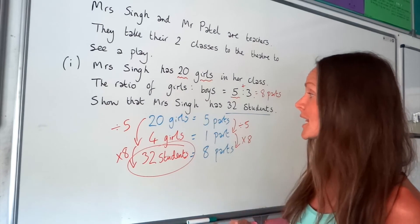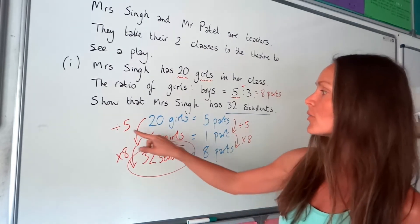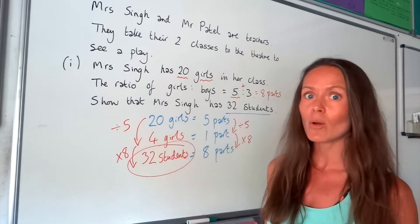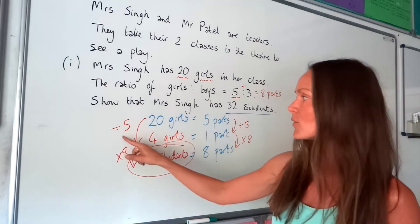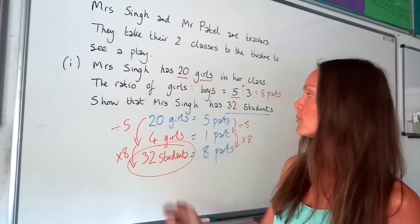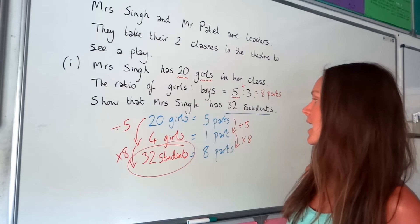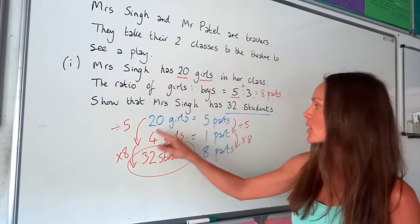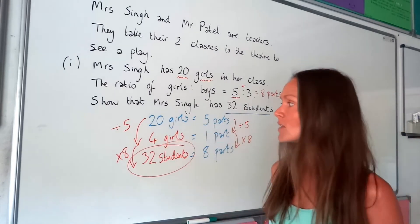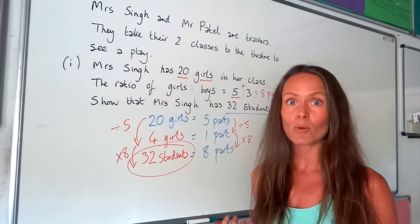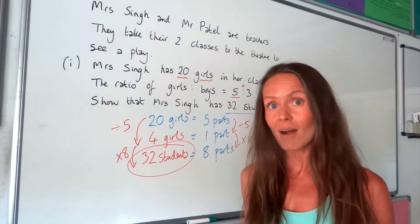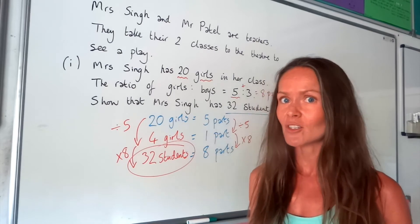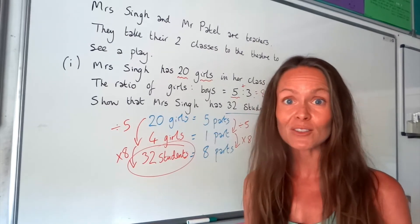It's really important that you show all your working out — dividing by five, multiplying by eight, showing that one part is equal to four girls — because that's what will get you the marks in this question.